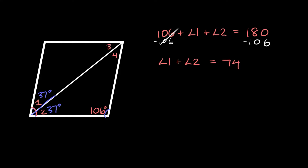Now let's solve for angle three and four. When you have a diagonal through a rhombus it creates a lot of symmetry. This angle is 106, and consecutive angles are supplementary, so this whole angle over here must also be 74, because 106 plus 74 equals 180. Half of 74 is 37, so angle three is 37 and angle four is also 37. Angle one equals angle three and angle two equals angle four — all opposite angles are the same.